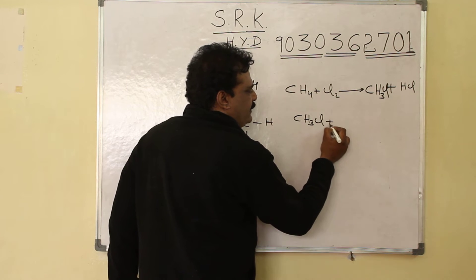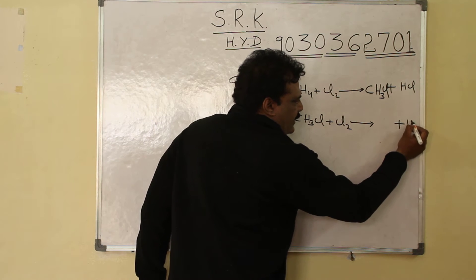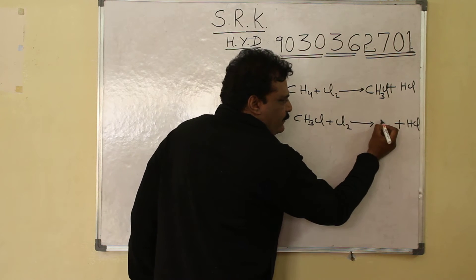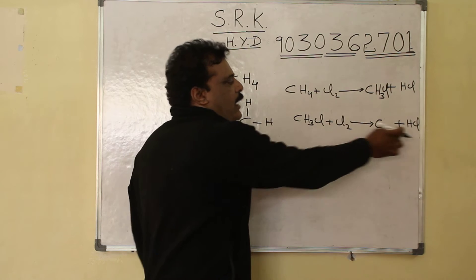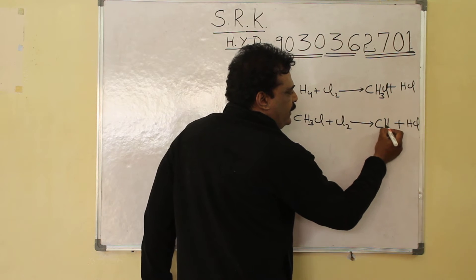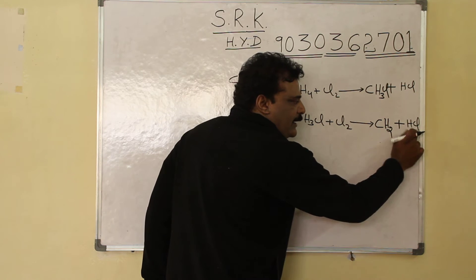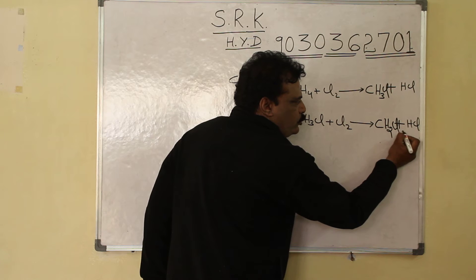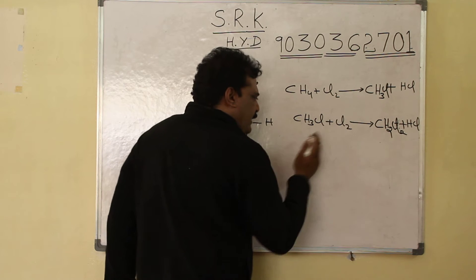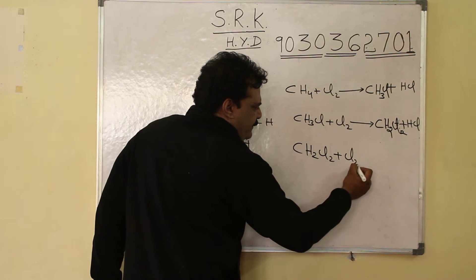Take CH3Cl and react again with Cl2. Remove HCl as usual. One carbon atom — not removed. Out of three hydrogen atoms, eliminate one, remaining two. Out of three chlorine atoms, eliminate one, remaining two. So we get CH2Cl2.